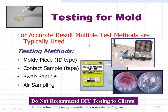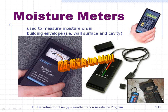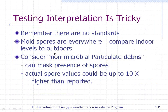For accurate testing results, multiple test methods are typically used, including: moldy piece identification, contact sample tape, swab sample, and air sampling. Do not recommend do-it-yourself testing to clients. Moisture meters are used to measure moisture on and in the building envelope — for example, on the wall surface and in the cavity; 12.5% to 16% moisture is too high. Testing interpretation is tricky — there are no standards, mold spores are everywhere, compare indoor levels to outdoors, and actual spore values could be up to ten times higher than reported.